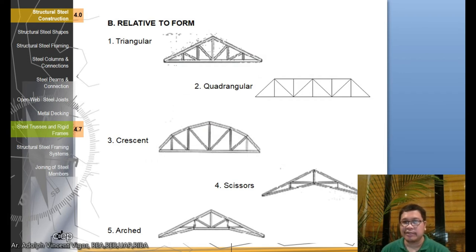Relative to form, these are the common trusses. This is what you usually see in your houses, a triangular truss. When you reach your theory of structures, you'll be able to recognize which members are subjected to compression forces and which to tensile forces. There are also web members which don't carry any loading but are just there to make the truss look more balanced. This is a quadrangular truss, which is the form you usually see in bridges.